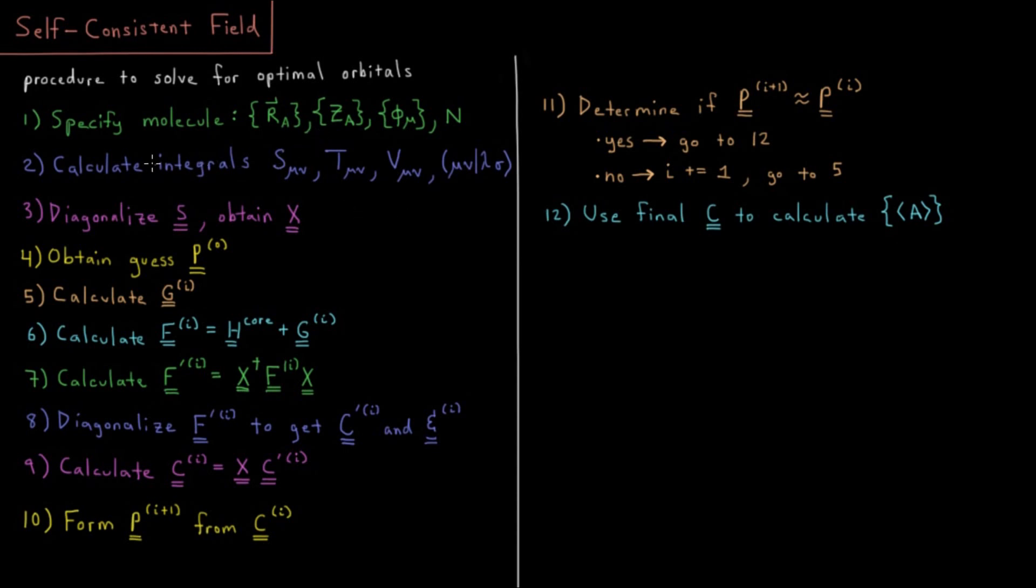The first thing we need to do is specify a molecule. So in quantum chemistry, a molecule is typically a set of nuclear coordinates. So we need X, Y, and Z coordinates for every nucleus you have, as well as what are the charges of those nuclei, aka what atomic identities do they have? Is it hydrogen, carbon, oxygen, et cetera?